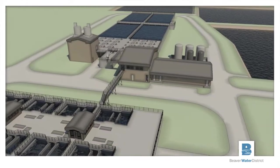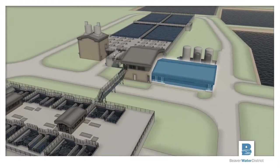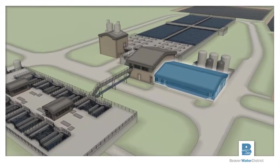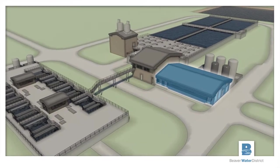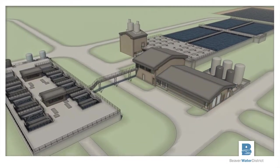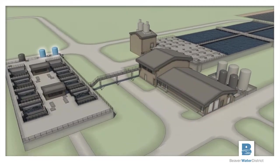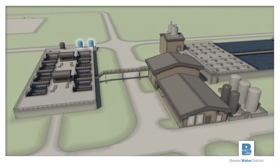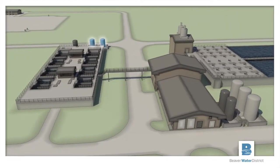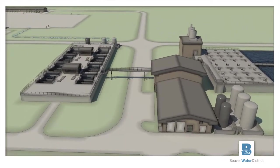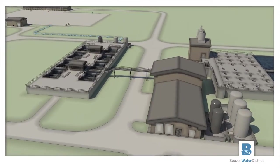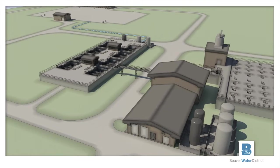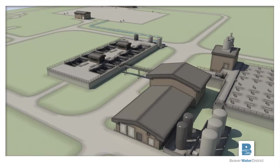Chlorine is added to the filtered water as a disinfectant to kill any viruses and bacteria. Sodium hydroxide is also added to the filtered water for final pH adjustment. The filtered water then flows through a buried pipe to the clear well.